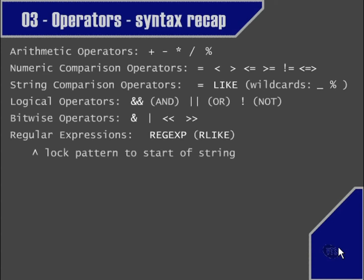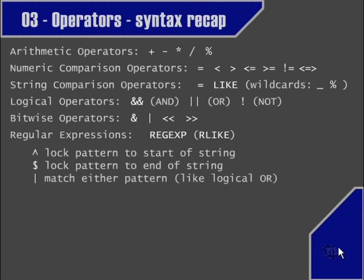We can use the caret symbol (^) to lock the pattern to the beginning of the string, and the dollar symbol ($), when used at the end, locks the pattern to the end of the string. The pipe symbol (|) works like logical OR when used within a regular expression, to match either one of the patterns on either side of it.